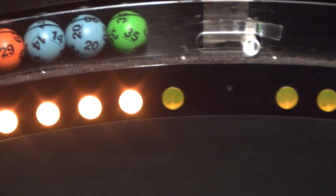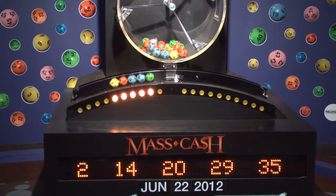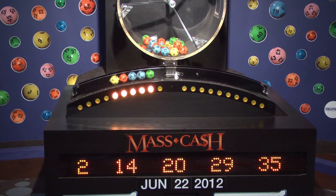Once again, the winning Mass Cash numbers for Friday, June 22nd are 2, 14, 20, 29, and 35.